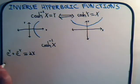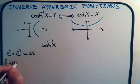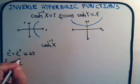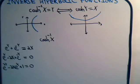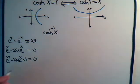Bringing this over here, we have e to the y minus 2x plus e to the minus y equals 0. Then multiply by e to the y to get rid of this negative exponent, and we have e to the 2y minus 2x e to the y plus 1 equals 0. We'll have to solve for e to the y using the quadratic formula.